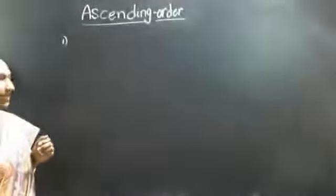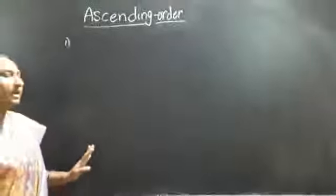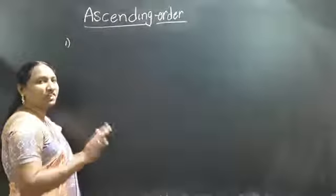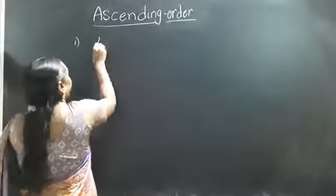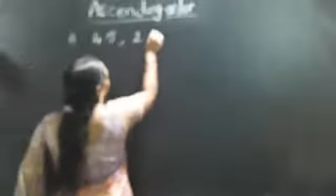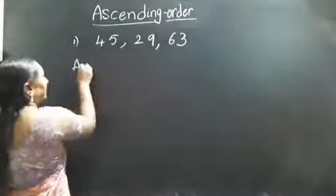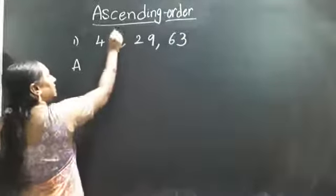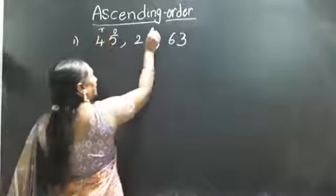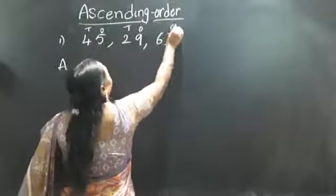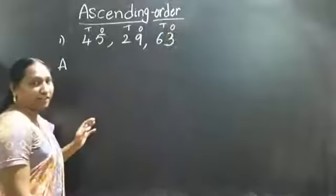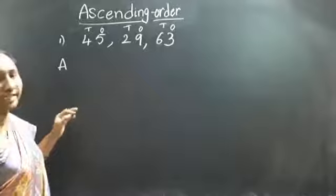We will check the tenths place and ones place. Tenths place is different — stay in tenths place. See here: in these numbers, this is the ones place and this is the tenths place. You have to write like this in your notebook — ones place and tenths place.